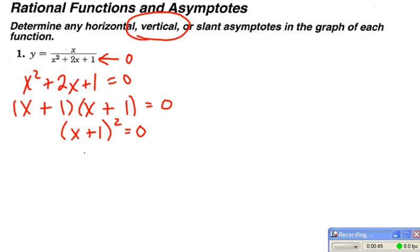So that means that if x were equal to negative 1, I would end up with a 0 in the denominator. So my vertical asymptote has to be located at x equals negative 1 on the graph.